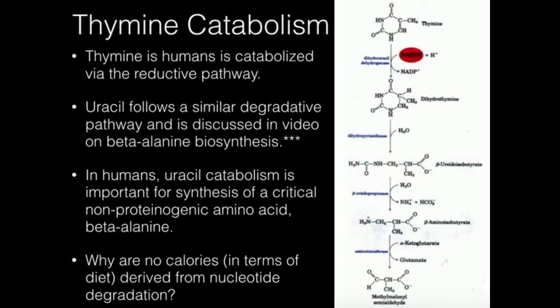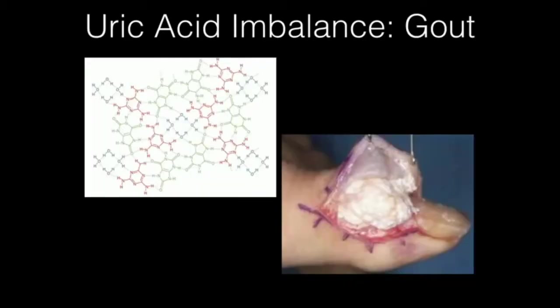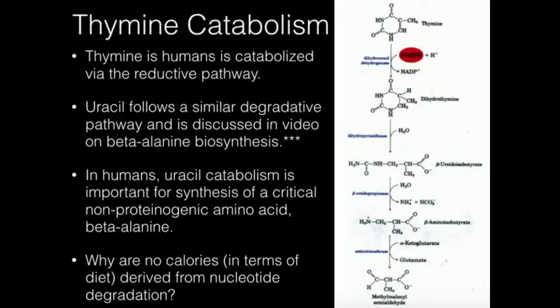Recall that purines in general get degraded in humans to uric acid. And when we have problems excreting that uric acid — or it's thought to be the problem — we can get purine buildups like gout. That's a very painful disease. And so for the most part, purine catabolism is a lot more interesting than pyrimidine catabolism, but we still have to do pyrimidine catabolism.